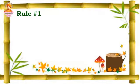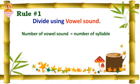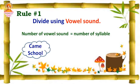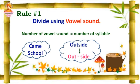Let's see the rules one by one. Rule number one: divide using vowel sound. The number of vowel sounds equals the number of syllables. Example: chime — I can hear the vowel A; school — I can hear the vowel O. I can hear only one vowel sound in each, so they are monosyllable words. Next, outside — I can hear two vowel sounds, so it is a disyllable word.